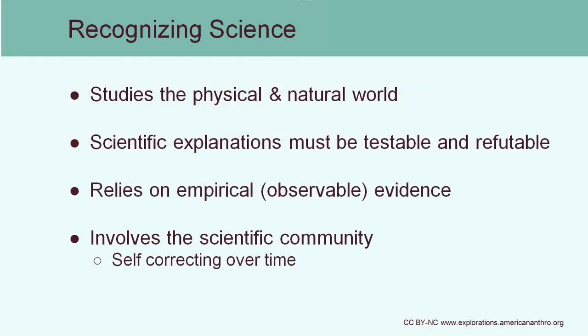Now let's wrap it up by recognizing science. Science is the study of the physical natural world, but anytime you use a scientific study or explanation, it must be testable and refutable. That's different from when someone just casually says they have a theory — they're probably not using the term in a scientific context. In scientific context, it's something that has to be testable, so you need to be able to provide evidence that either supports your idea or refutes it. It also has to have empirical or observable evidence. And it is self-correcting over time, meaning that other people can repeat your experiment and find new evidence — the new evidence might actually contradict your evidence. That's how we're able to change our theories over time and make them better.